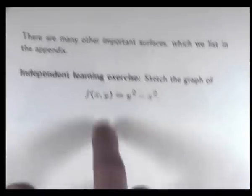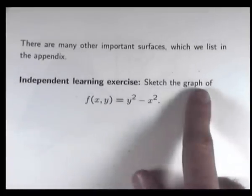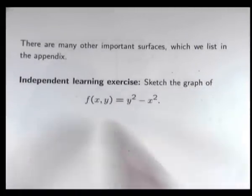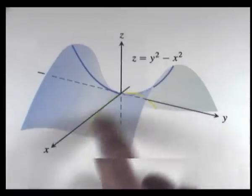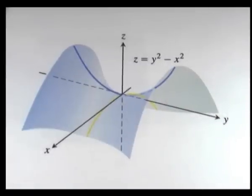There are many other surfaces — ellipsoids and others. Here's an independent learning exercise for you: a function is defined in a certain way and you should try to sketch its graph. As a hint, what you should come up with looks like this — it has sections in the XZ and YZ planes, and all you really need to do is work out the level curves. That's a little bit on functions of two variables and how to sketch them.